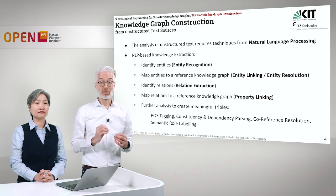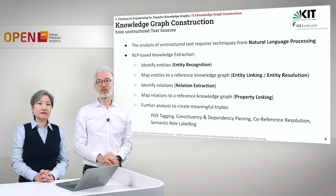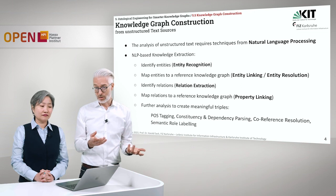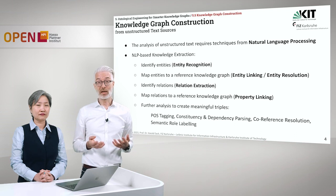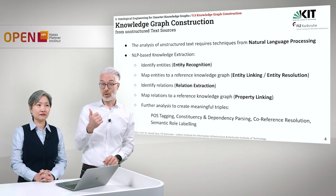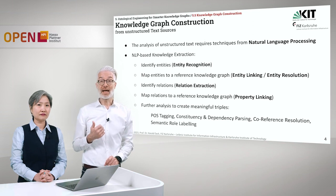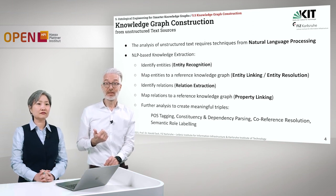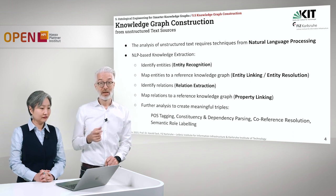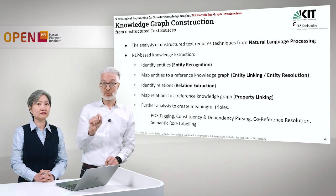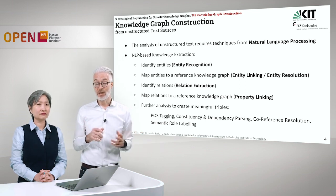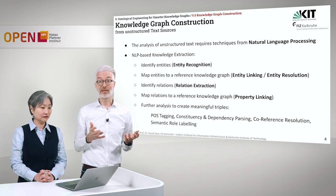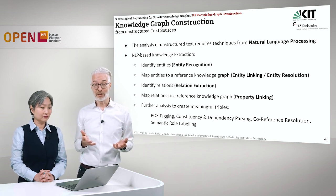We start with knowledge graph construction from unstructured text. If you have unstructured text, it means this is text given in a natural language. What you have to do is apply techniques from natural language processing. First of all, you have to identify which entities the text is speaking about — this is entity recognition. Those entities then have to be mapped to a reference knowledge graph, for example to DBpedia, to Wikidata, or to any other reference data. This is called entity linking or entity resolution.